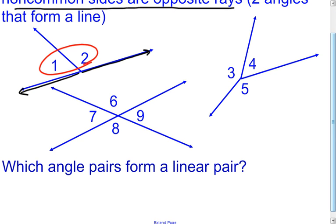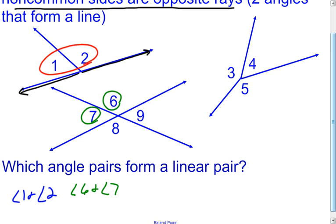In the next picture there are lots of possibilities. Angle seven and angle six form a linear pair — cut off the bottom part and it looks just like angle one and angle two. So we have angle one and angle two, angle six and angle seven, angle six and angle nine, angle eight and angle nine, and angle seven and angle eight — all making linear pairs. I didn't write them all down, but I think you get the idea of what a linear pair is.